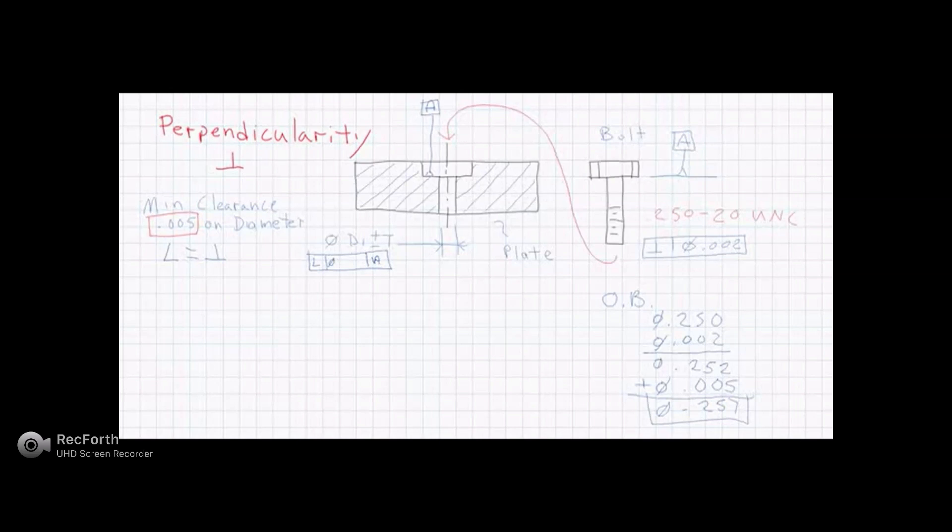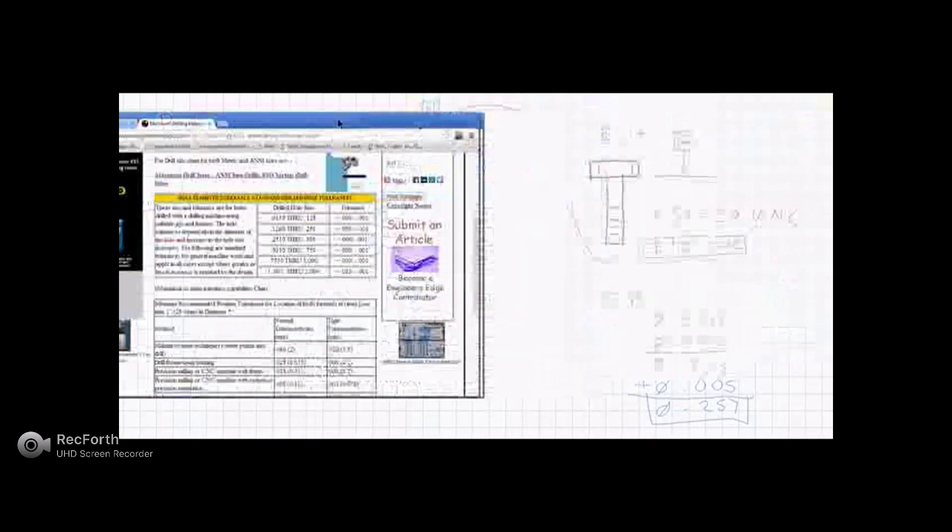So we now know what the innermost boundary of our clearance hole is going to be. So let's write down the equation for our inner boundary. What we're going to do on our hole feature is we're going to take the maximum material condition size, and we're going to subtract that perpendicularity tolerance, whatever it is, and then we know cumulative of size and geometric tolerance that we're not going to be smaller than a diameter of 257,000. Okay, so where do we get the numbers for this hole?